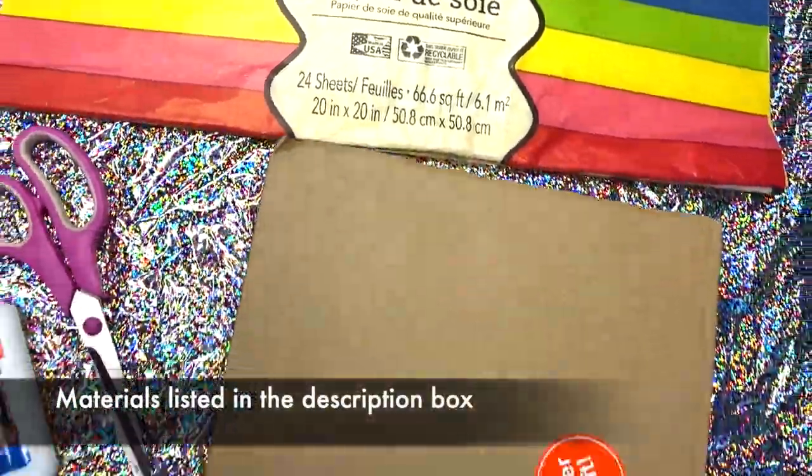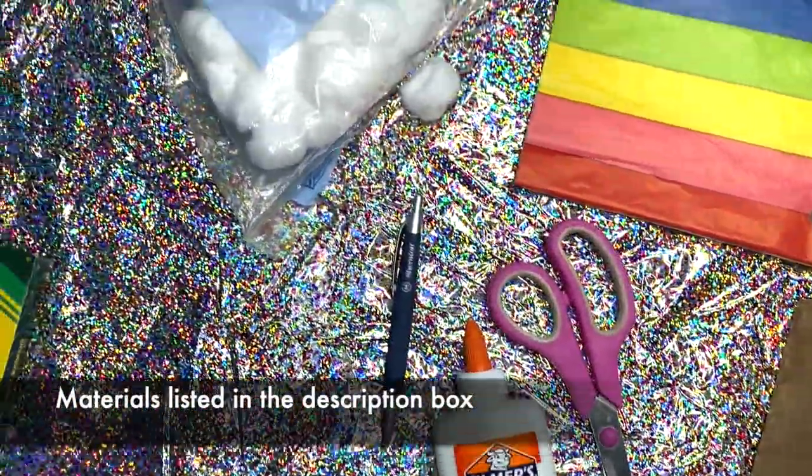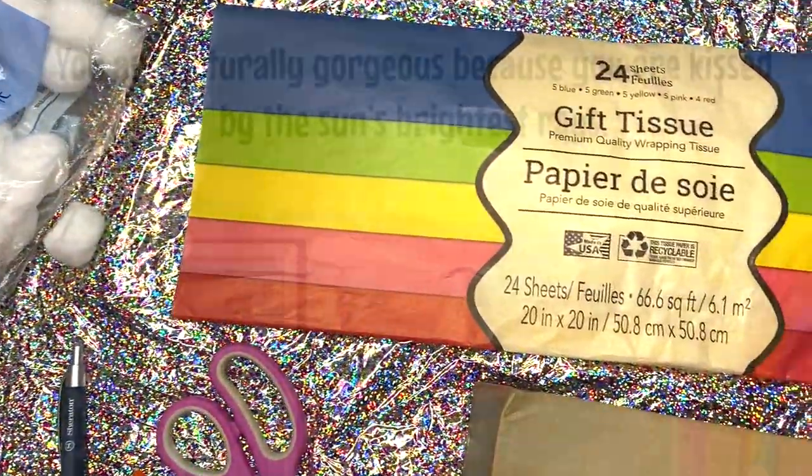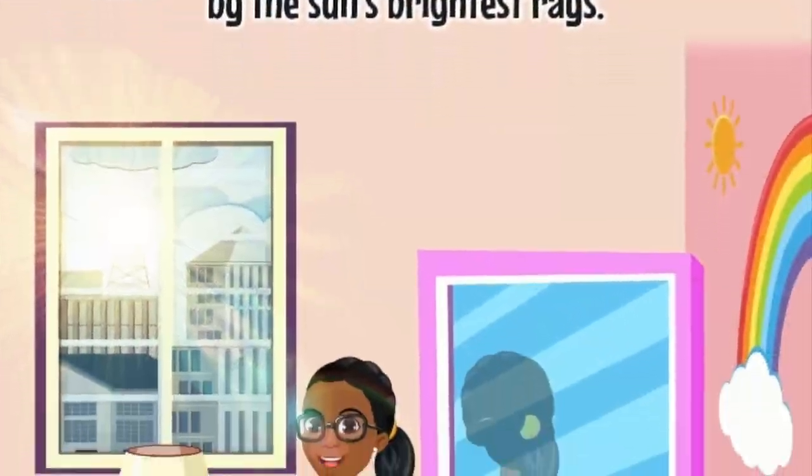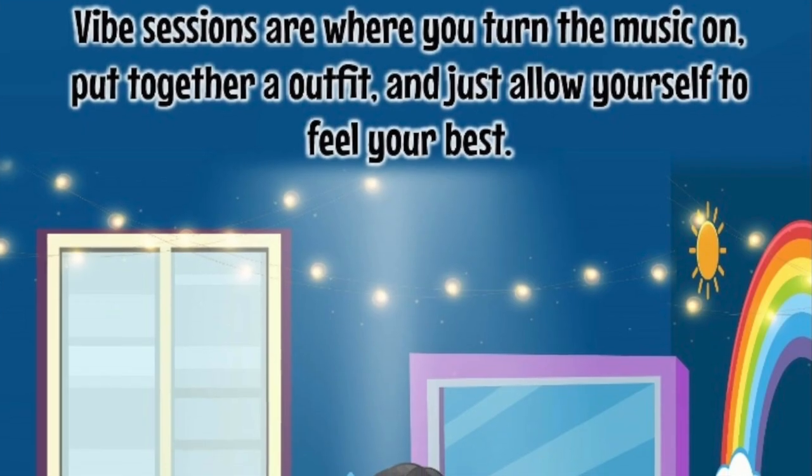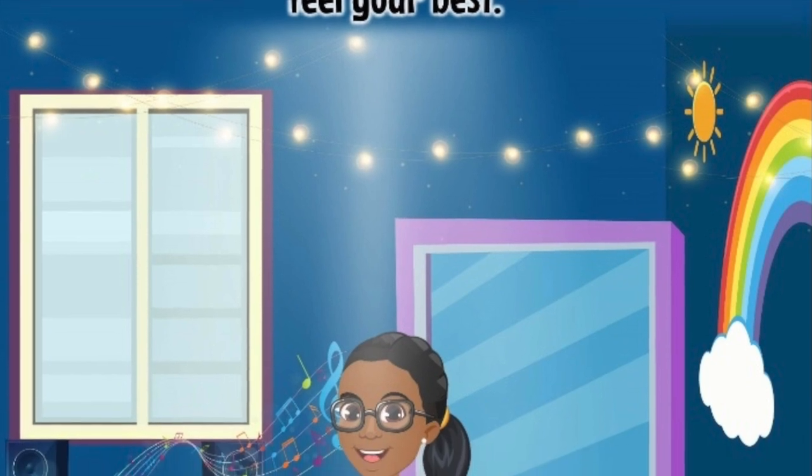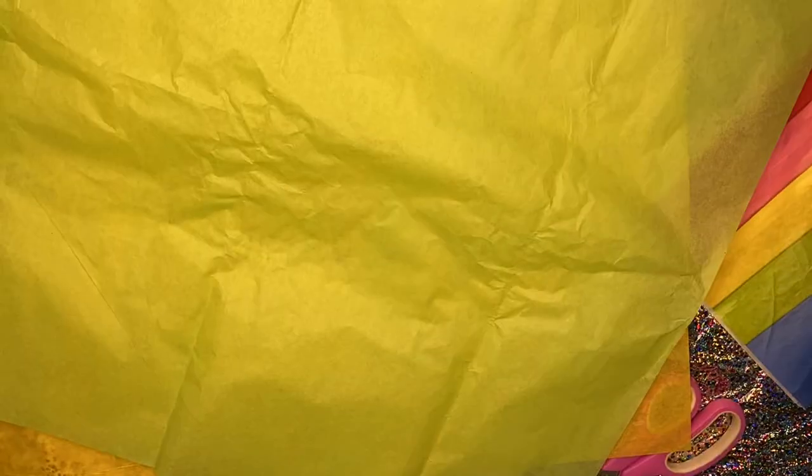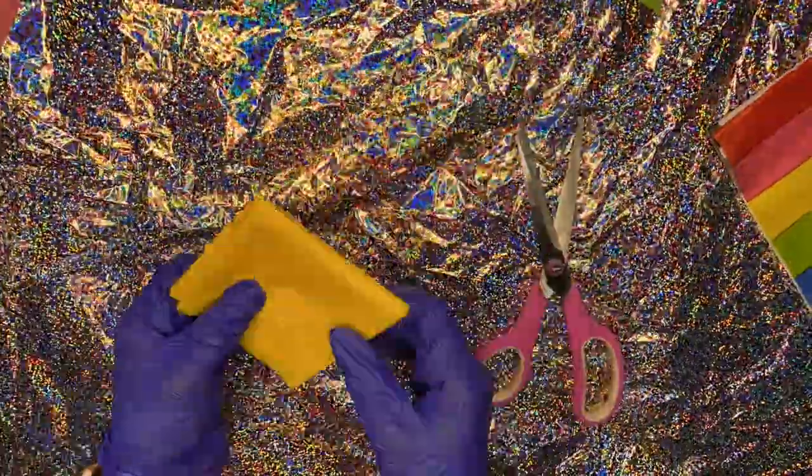So everything I use is in the description box below, so check that out if you want a full list of the materials. But what led me to this craft is because I kept seeing all these rainbows in the book. I kept seeing them on like several pages and I was like, oh, we gotta make that. So all I did was take some tissue paper, folding it up into little tiny pieces, and I'm just cutting a bunch of little bits of tissue paper because that's what you need to complete this. So go ahead and do that and keep the piles separate—don't mix the colors because it'll be a little tough for your child.